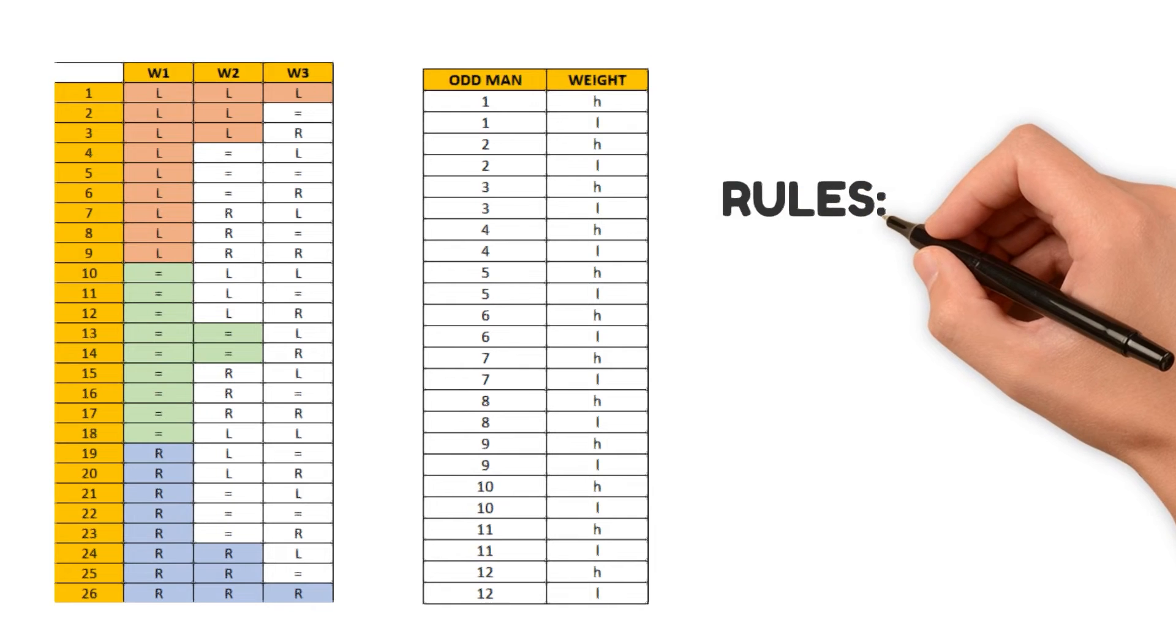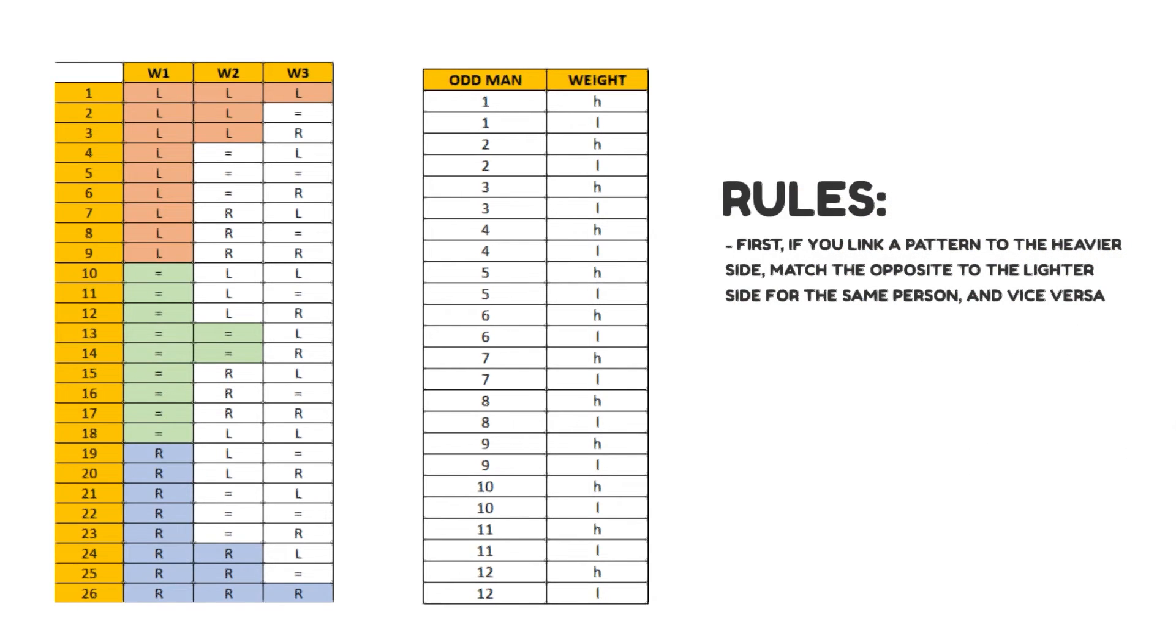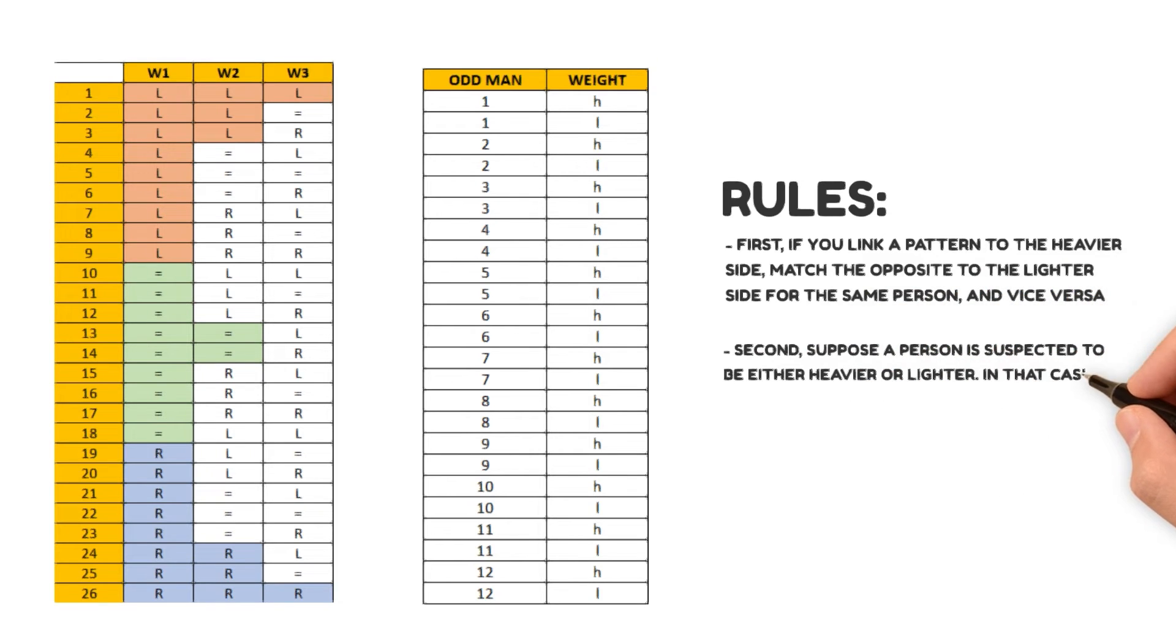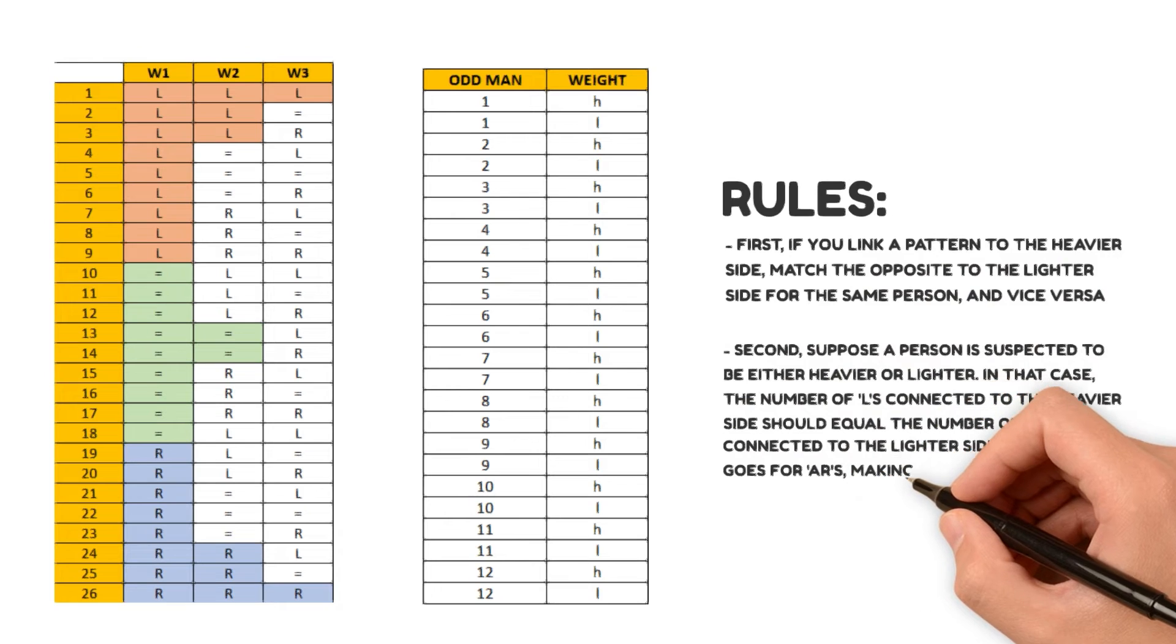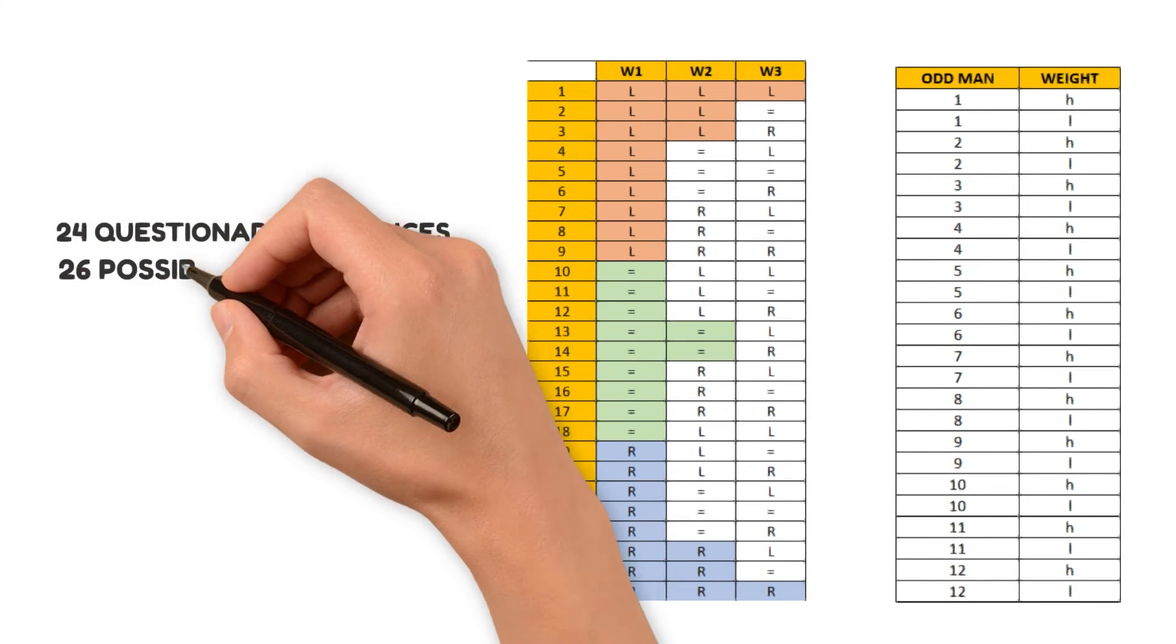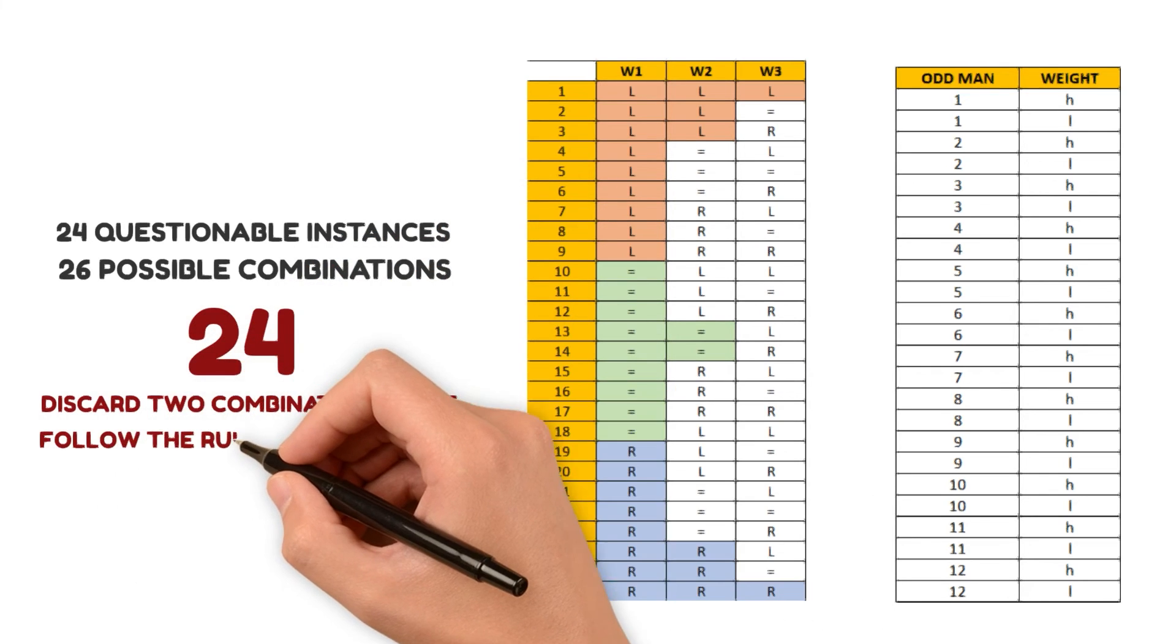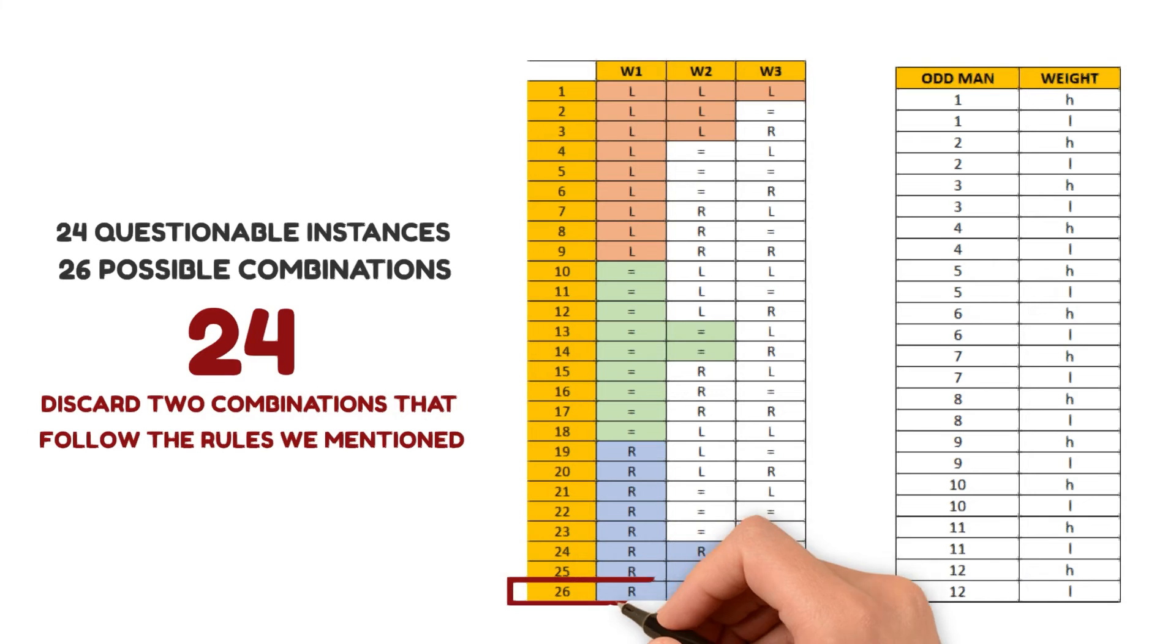Let's figure out how to arrange them in a step-by-step way. Remember two simple rules. First, if you link a pattern to the heavier side, match the opposite to the lighter side for the same person and vice versa. Second, suppose a person is suspected to be either heavier or lighter. In that case, the number of Ls connected to the heavier side should be equal to the number of Ls connected to the lighter side. The same goes for Rs, making the total number even. Now, the arrangement is pretty simple. We have 24 questionable instances and 26 possible combinations and we only need 24. So we discard two combinations that follow the rules we mentioned. Remove combinations LLL and its opposite RRR.